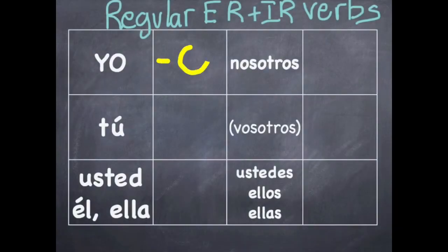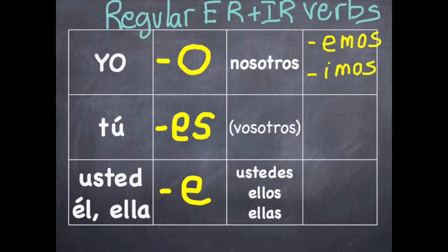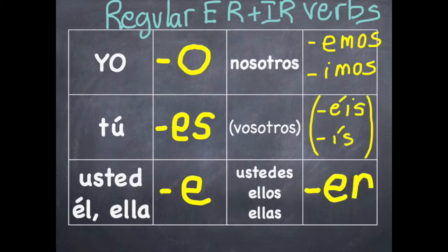Your ER and IR verbs are almost exactly the same with only one exception. Yo: -o; tú: -es; usted, ella: -he. And here's your exception — nosotros. You have both hemos or -imos. And ustedes, ellos, ellas: han.